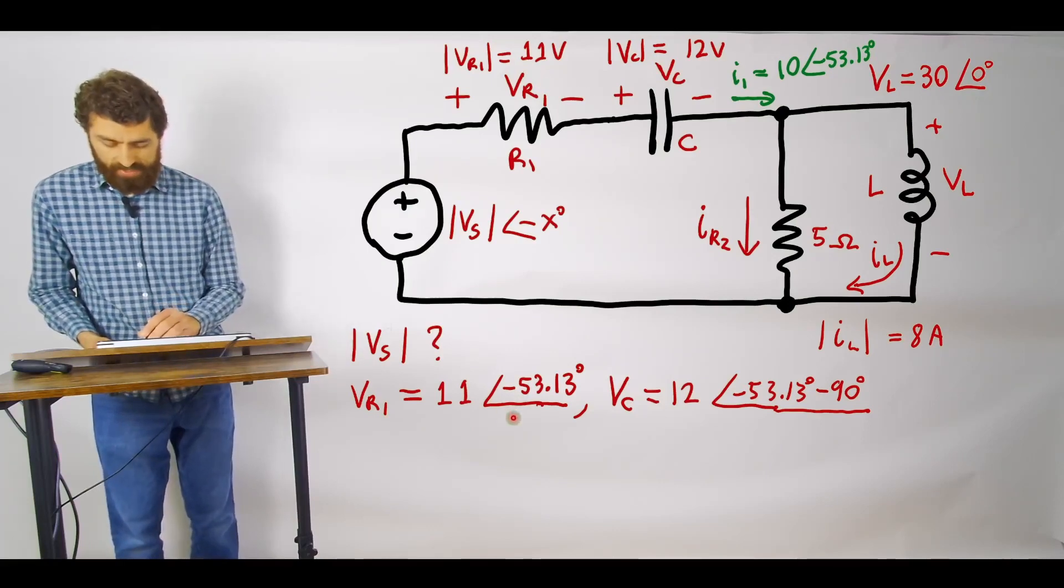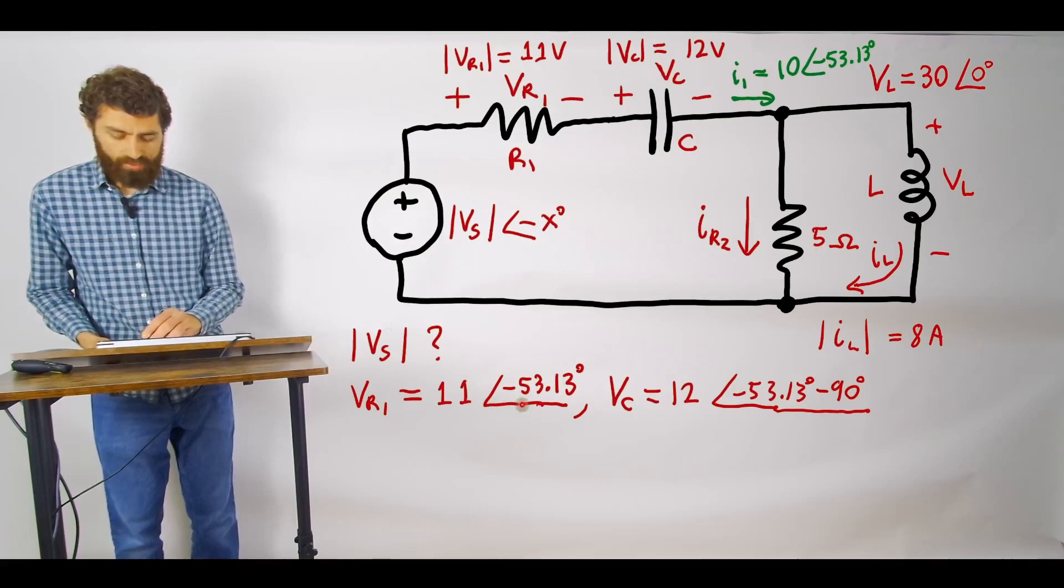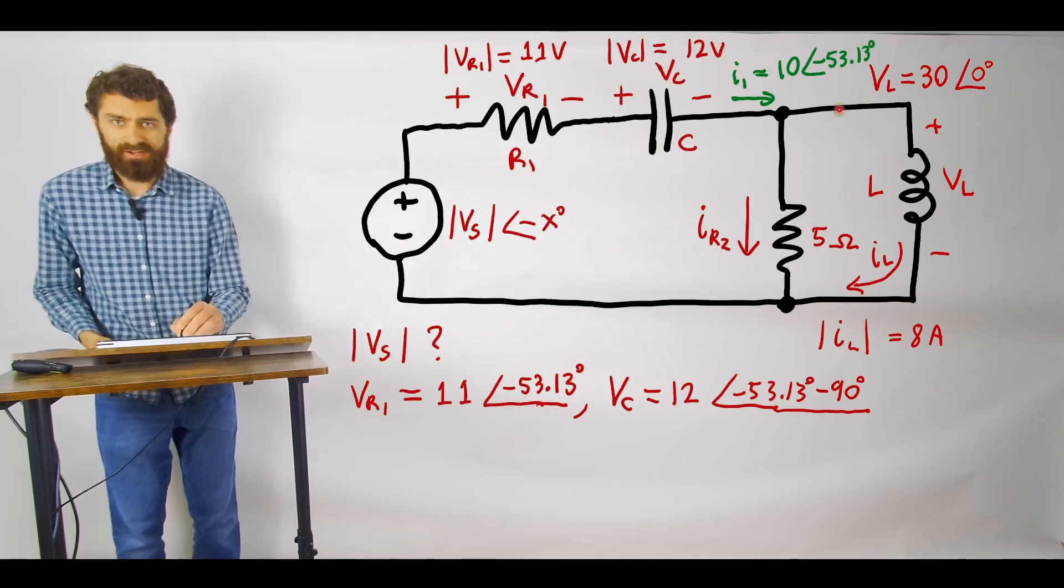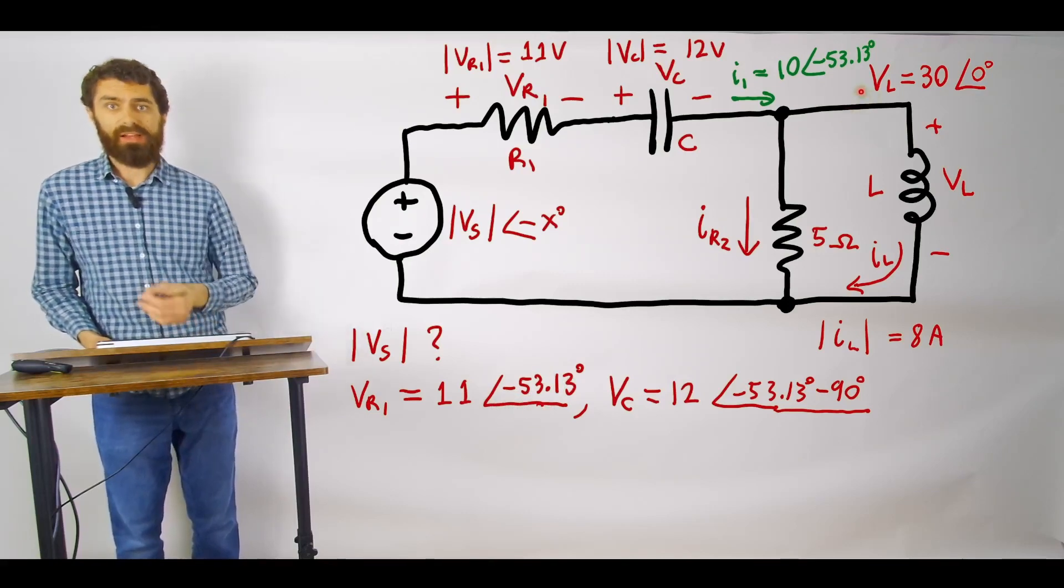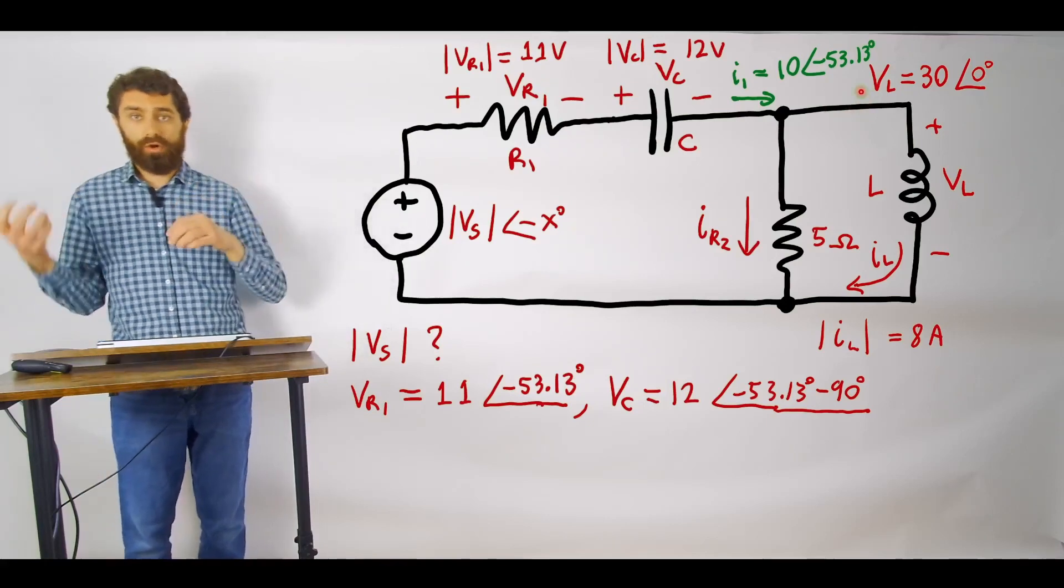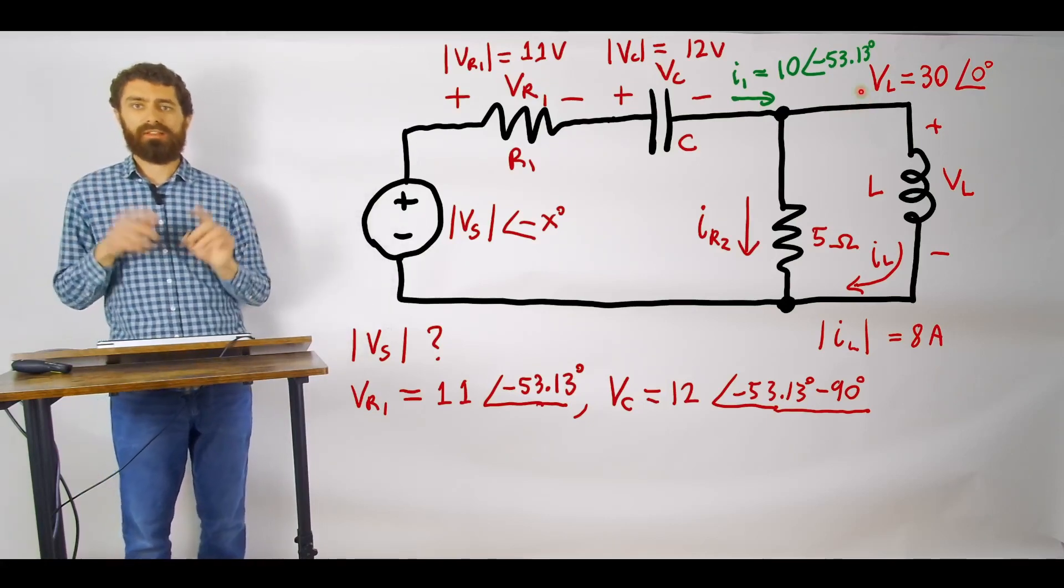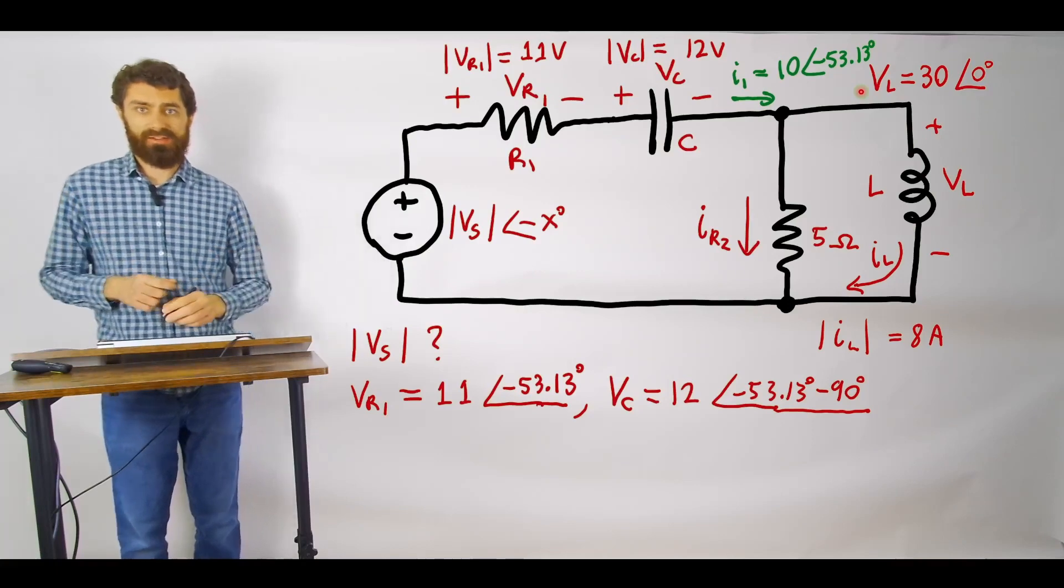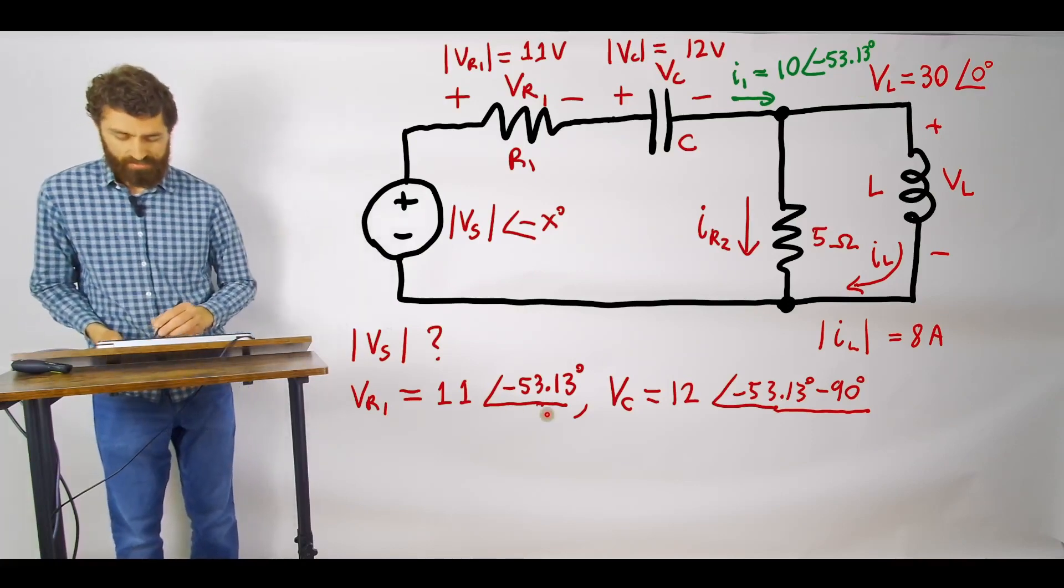and then the phase angle will be minus 53.13 degrees, the same phase angle as the current and that's because the voltage and the current through a resistor is always always always same, it always has the same phase so we just give that the same phase.